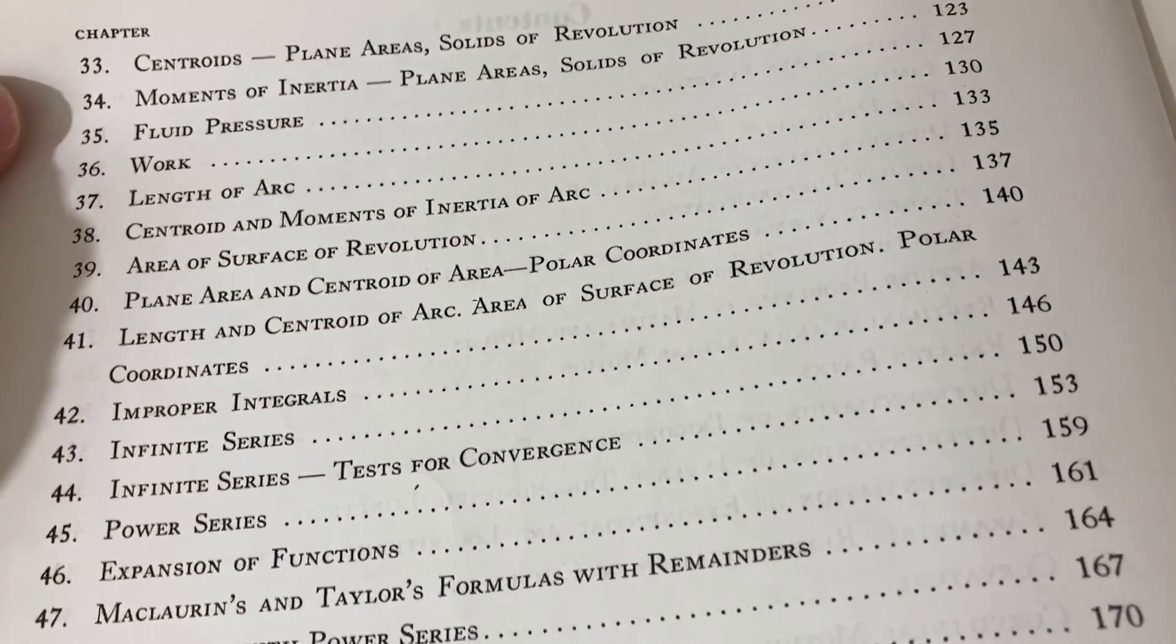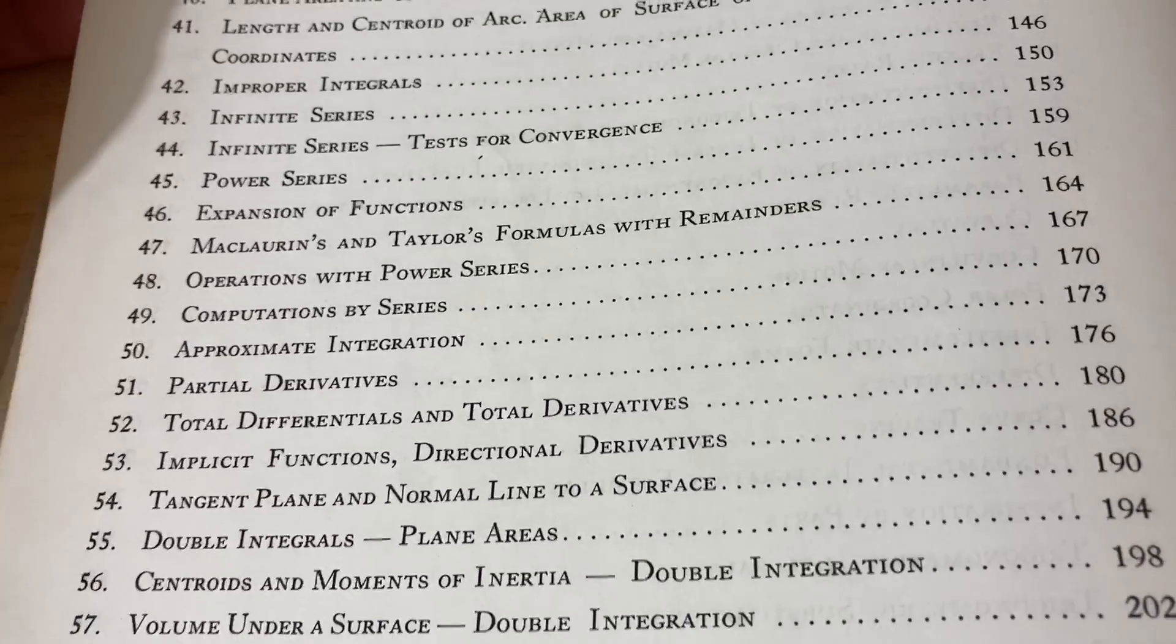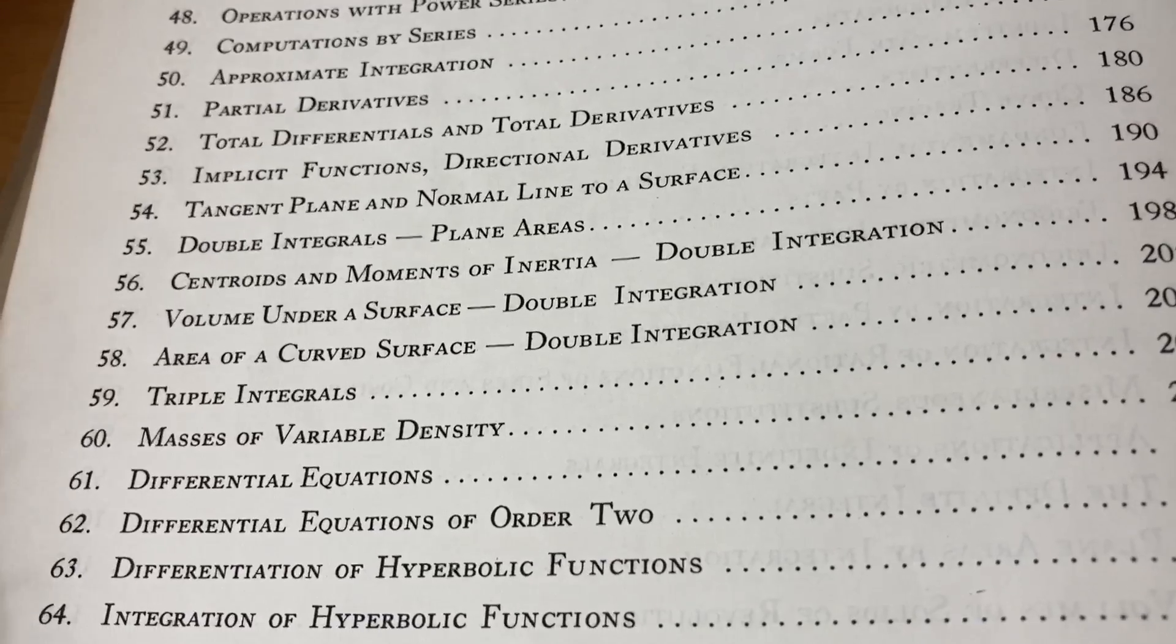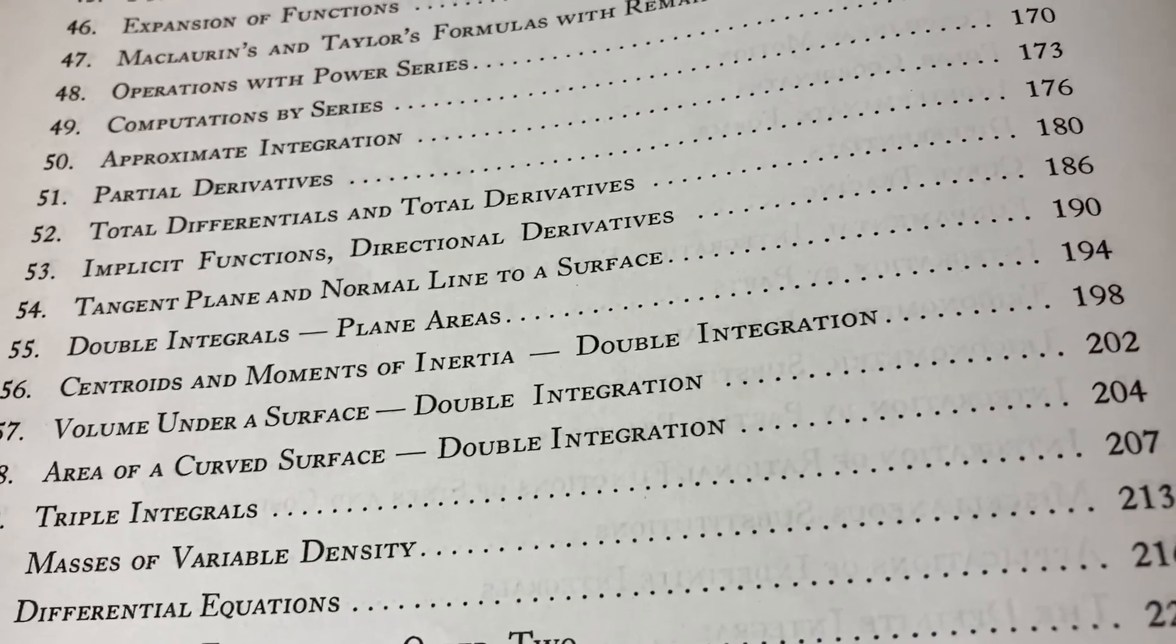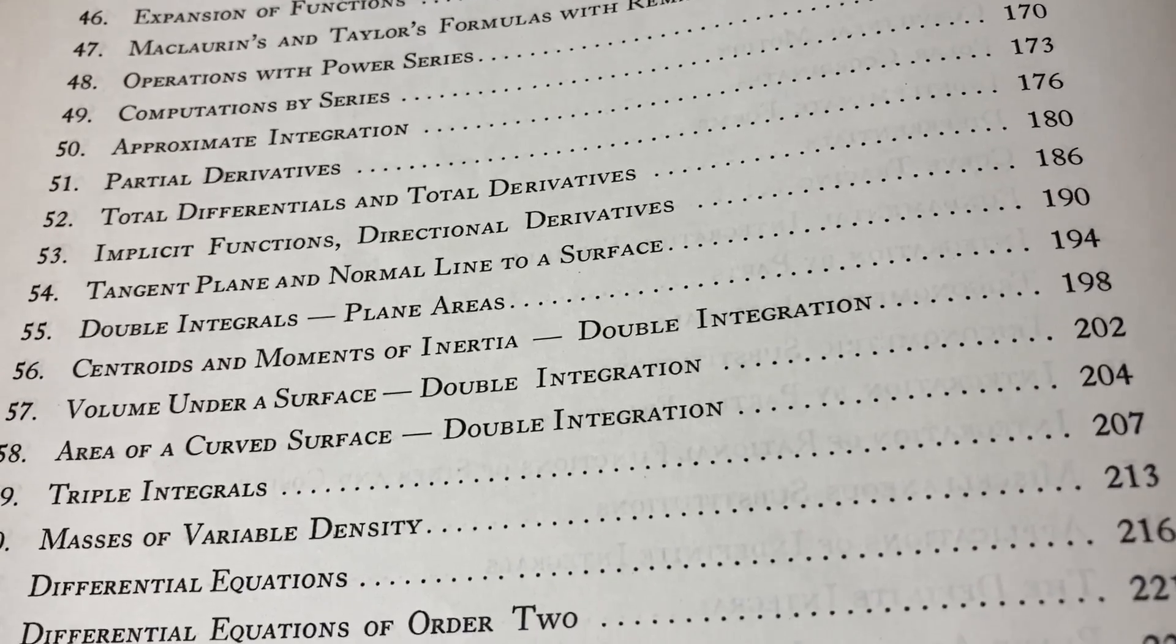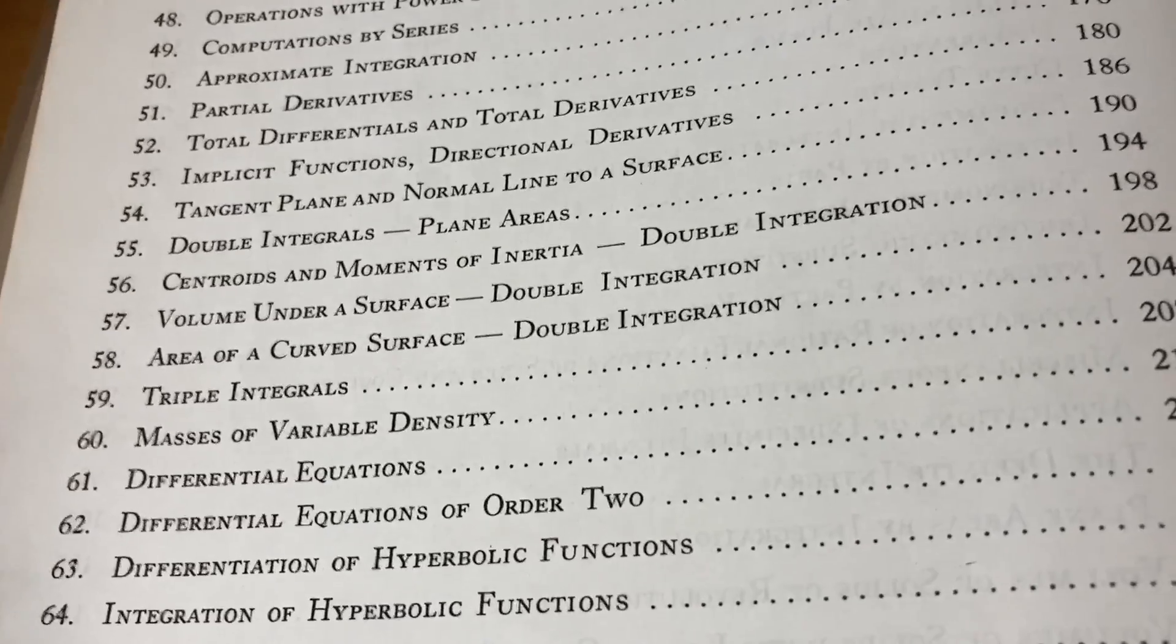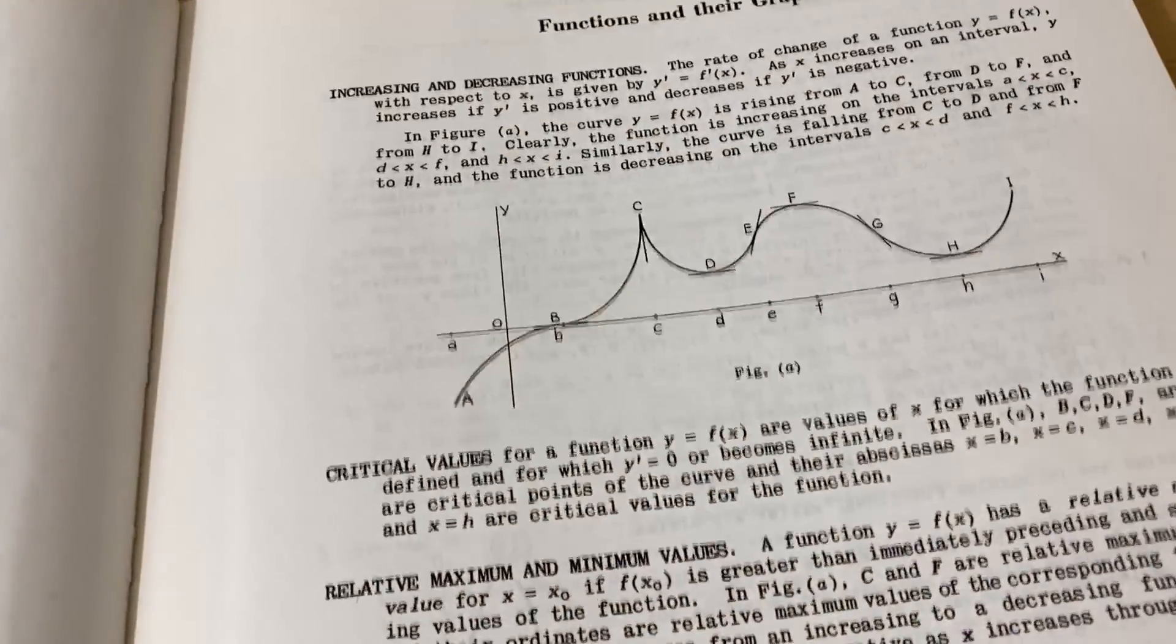Let's turn the page here. Centroids work. Fluid pressure. That's also Calc 2 stuff. Infinite series. Partial derivatives. Now we're in Calc 3. So you've got multivariable calculus here too. And you've got some differential equations. It's pretty cool. I feel like there's a couple topics missing from multivariable Calc. But you're getting mostly Calc 1, Calc 2, some Calc 3, and then you're getting some differential equations and stuff. So pretty cool.